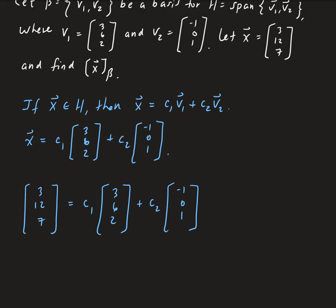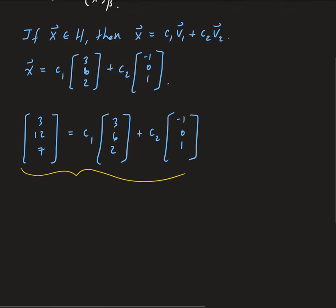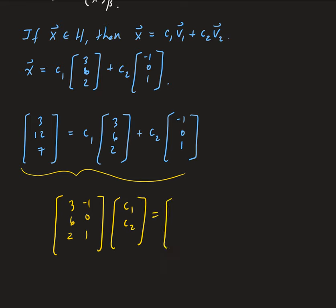So from here we can go ahead and write out our system. So this is the same as the matrix [3, -1; 6, 0; 2, 1] times [C₁, C₂] equals [3, 12, 7].